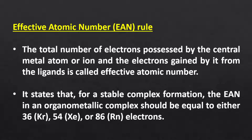For example, transition metals from the 3D series will try to achieve an effective atomic number of 36, as krypton is the noble gas in that period. Similarly, 4D and 5D transition metals will try to achieve an effective atomic number of xenon and radon respectively. After acquiring the electronic configuration of a noble gas, their complexes become stable.